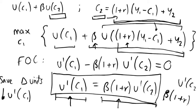Intuitively this makes sense: if we're optimizing, we can't change our saving and consumption patterns to increase utility, because any marginal change has equal cost and benefit. So we can't improve our consumption patterns further.